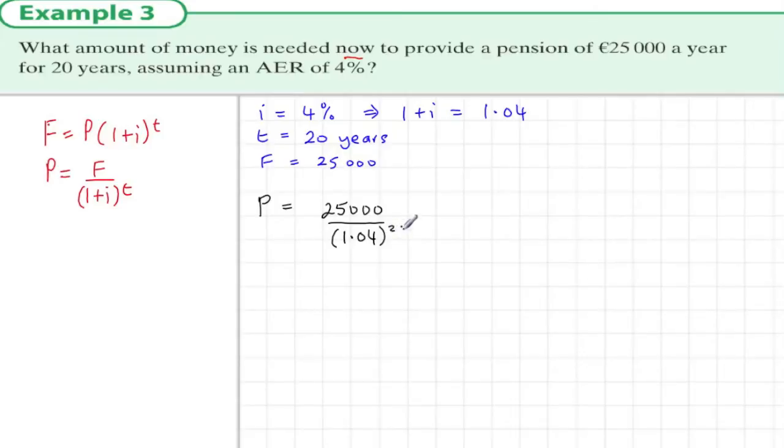And the second amount would have 19 years sitting in the bank to amount up to €25,000. This goes right down to the last amount which has been sitting just one year in the bank, so it's a little less than €25,000 because it's money that has been earning interest for one year.